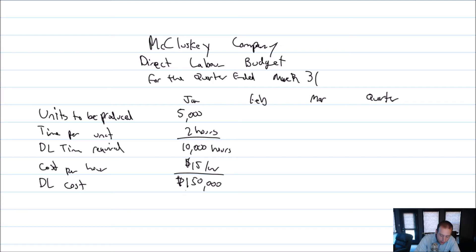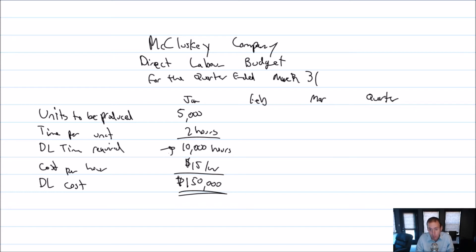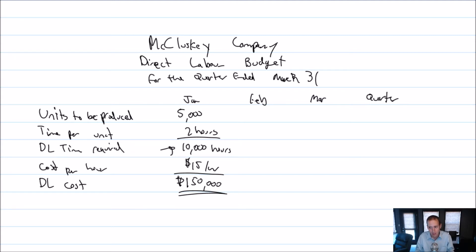I'm killing two birds with one stone with this budget. First, I'm saying I need 10,000 hours of labor — if my average employee works 40 hours a week, that's 160 hours a month, so I need about 80 employees, whatever number gets me to 10,000. That's how many people I need, and getting that many people might be a problem. The other thing is that those people are going to cost me $15 an hour — that's $150,000 I need to have ready. Our employees aren't waiting 30 days to be paid, so we know cash of $150,000 is flowing out the door. Two relevant things for planning are revealed by this budget.